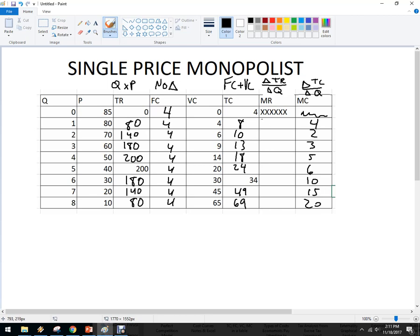And then the marginal revenue, we're going to get off this column here. So marginal revenue for that first one is 80, then it is 60, 40, 20, zero, negative 20, negative 40, and negative 60.